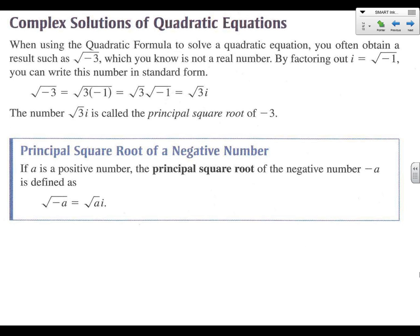All right, so now we're going to use what we know about complex numbers to come up with complex solutions to quadratic equations. So all of a sudden we're going to introduce equal signs into everything that we've done so far. Remembering that the square root of negative a is the same thing as saying root a and then putting an i on the end. So i stands for the negative under the square root.